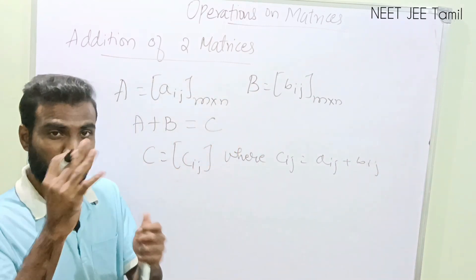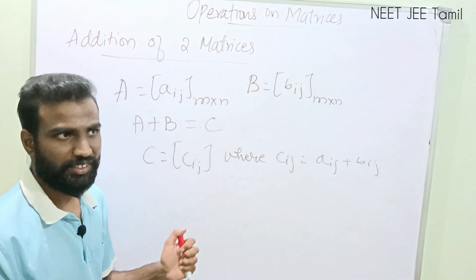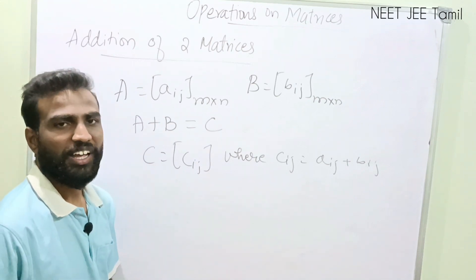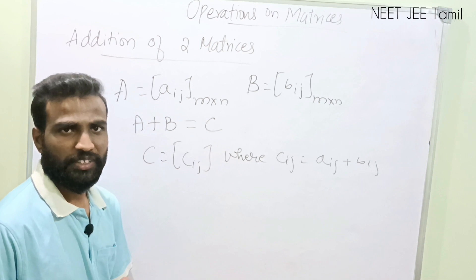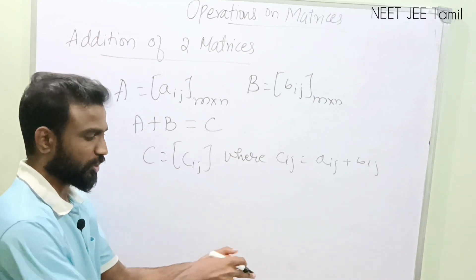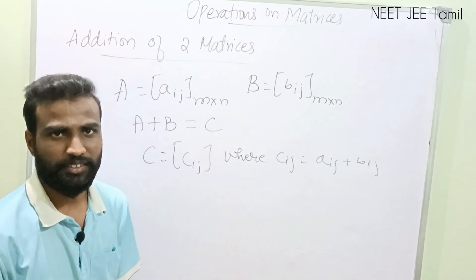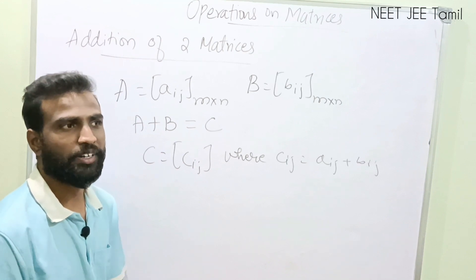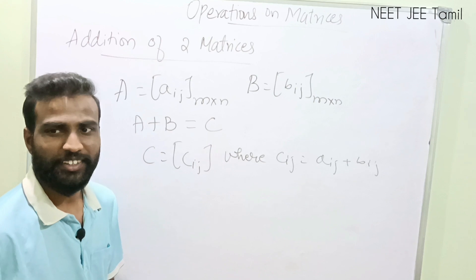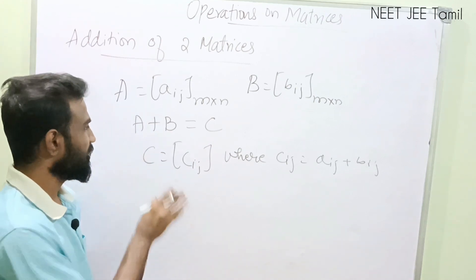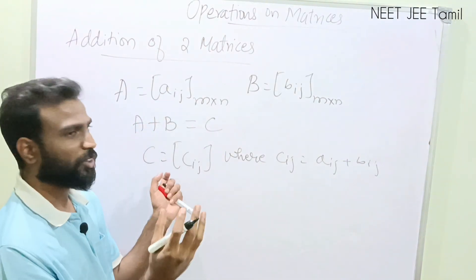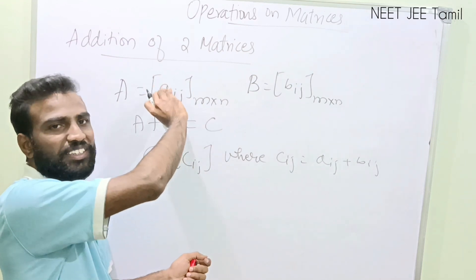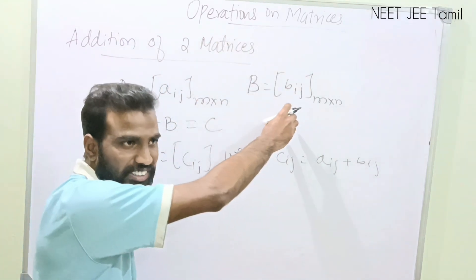So you may be getting confused with all these things. There are matrices A and B, both of the same order, and when we add them together we get another new matrix. To explain with an analogy: there are two friends, Ashwin and Joy. When they sit together, one makes lemon rice and another makes some curry. Towards the end they mix together the lemon rice and curry to make something called kichdi. So the resultant product is kichdi. Same thing is happening here — product A and product B combine together to give one new product C. The elements of C are always the sum of each element of the first matrix with its corresponding element of the second matrix.